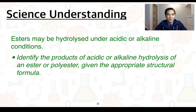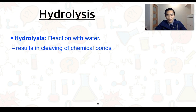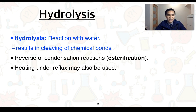For our final science understanding: esters may be hydrolyzed under acidic or alkaline conditions. You'll need to be able to identify the products of acidic or alkaline hydrolysis of an ester or polyester, given the appropriate structural formulae. Hydrolysis is essentially a reaction with water, resulting in the cleaving of chemical bonds within our ester — similar to carbohydrates and amides. You can think of hydrolysis as the reverse of condensation reactions. In the case of esters, condensation forms esters from alcohols and carboxylic acids, whereas hydrolysis reacts an ester with water to reform the alcohol and carboxylic acid. Hydrolysis reactions can also be carried out through heating under reflux to help speed up the reaction.